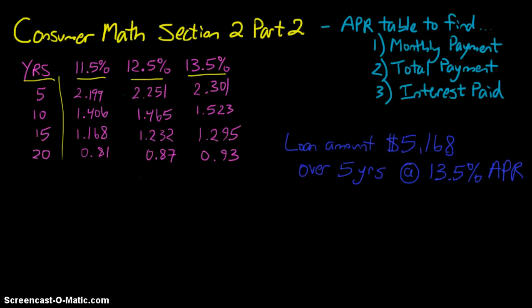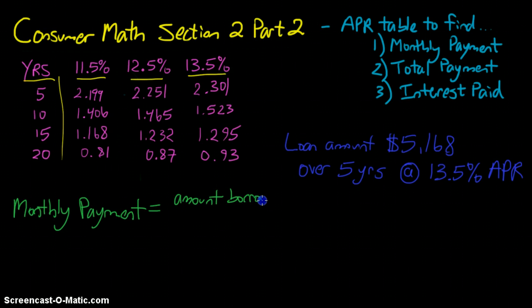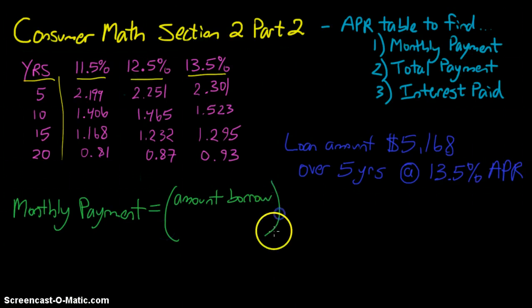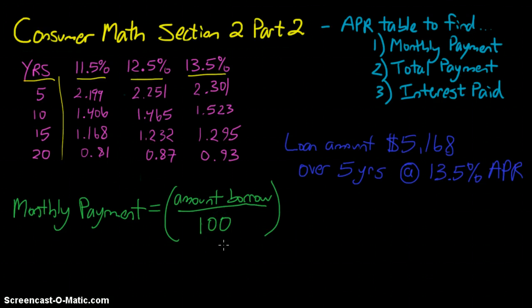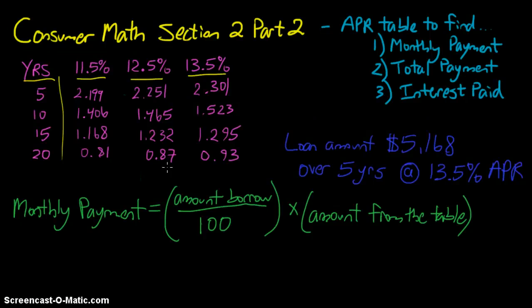So we're looking at finding the monthly payment. So our monthly payment is figured by this simple formula here. Our monthly payment is equal to the amount borrowed or the amount financed, divided by 100 to find the number of hundreds. We're then going to multiply that by the amount that we find from the table. Because the table here, this chart, will determine then how much money we'll owe for having borrowed that amount to begin with.